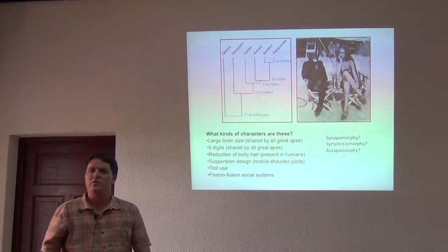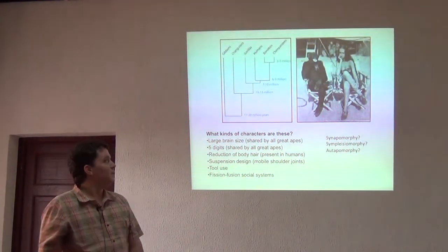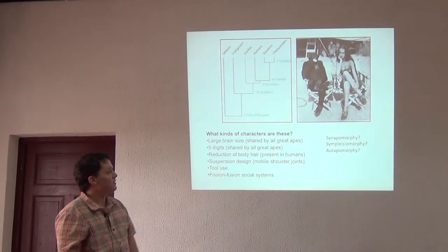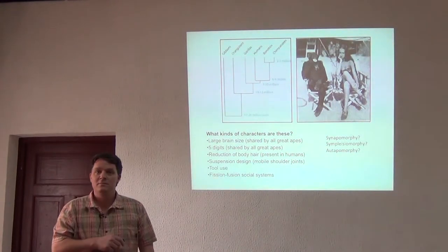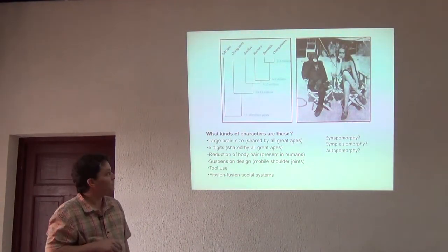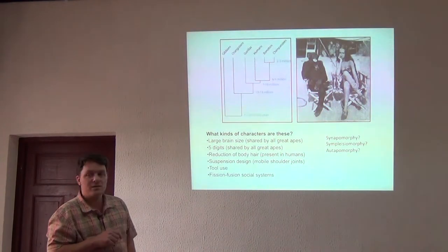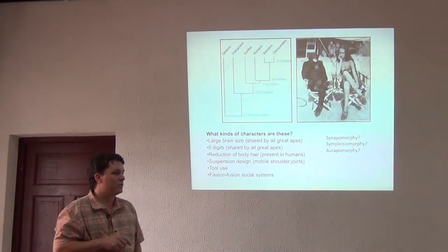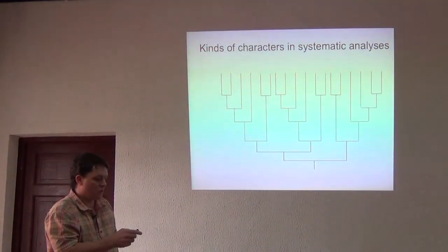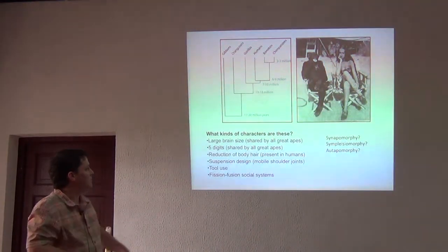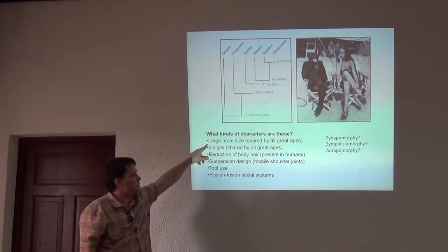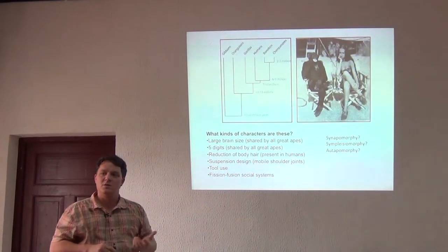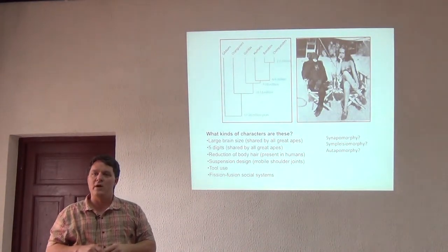Those are how things can get kind of confusing. Let's go through some characters and I want you to tell me whether they are synapomorphy, symplesiomorphy, or autapomorphy for a clade familiar to all of us — great apes. We have a chimp, like the ones we might see in Rhumbi Hills. These are the inferred divergence times between these taxa: chimps, bonobos, humans, gorillas, orangutans. Large brain size is a character state shared by all great apes — what kind of character is that? Synapomorphy, right? It's something the great apes share — a shared, derived character.